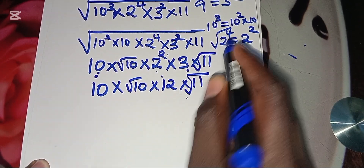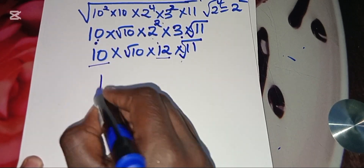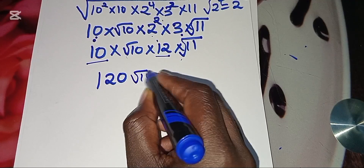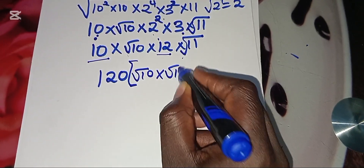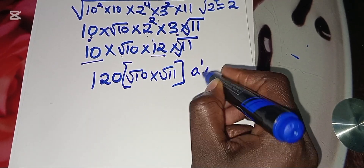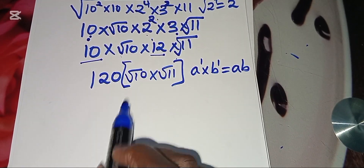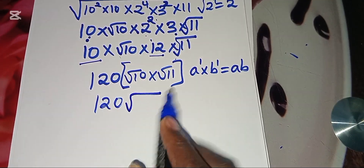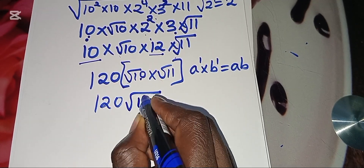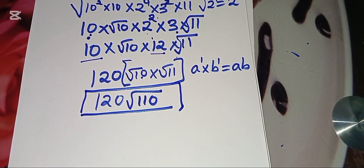We have square root of 10 times square root of 11, and using the property that square root of a times square root of b equals square root of ab, we get square root of 110. So the final answer is 120 times square root of 110. That is the solution to our square root math problem.